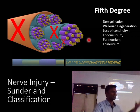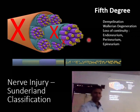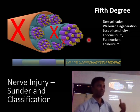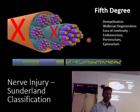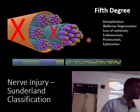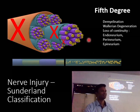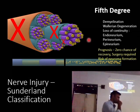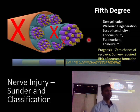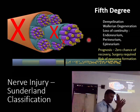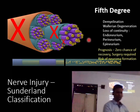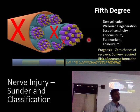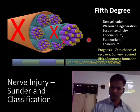In fifth degree — the final level — all structures are cut: demyelination, Wallerian degeneration, and loss of continuity of endoneurium, perineurium, and epineurium. Recovery is essentially zero without microsurgery, and even after microsurgery full recovery is not expected. If the transected nerve is left unsutured, the lack of any guide leads to a risk of neuroma formation.